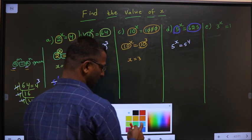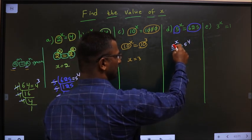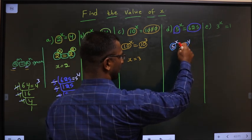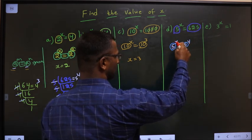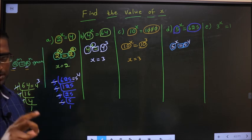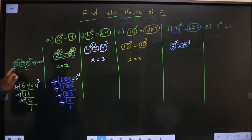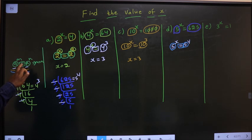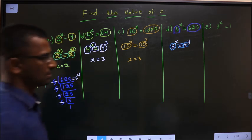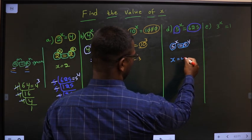So 5 power x equal to 5 power 4. The observation is bases are same and equal to is present. Bases are same, equal to is present, so equate the powers. x equal to 4.